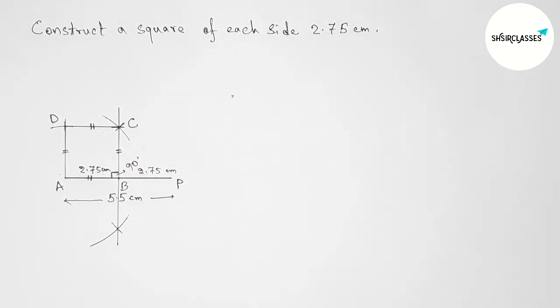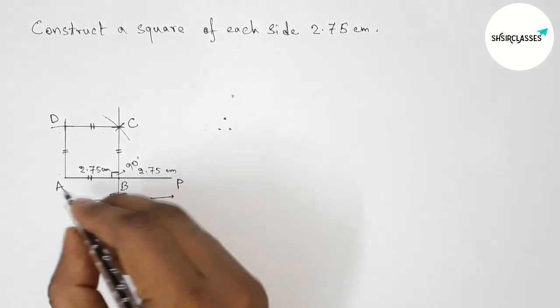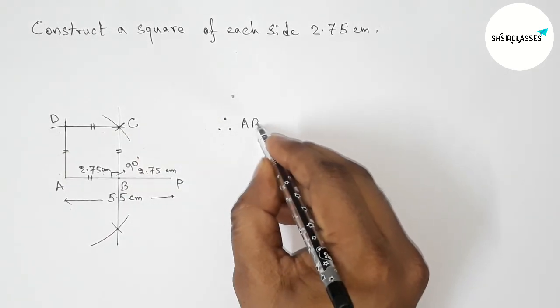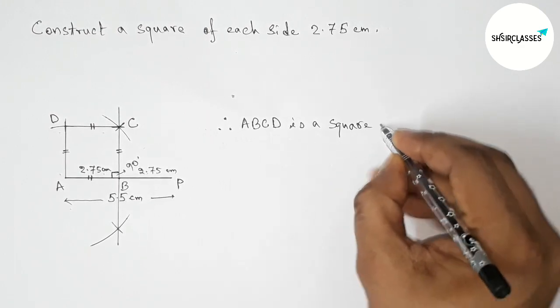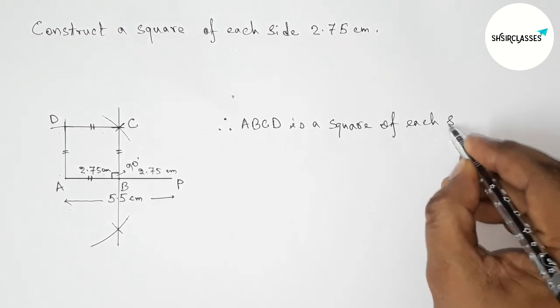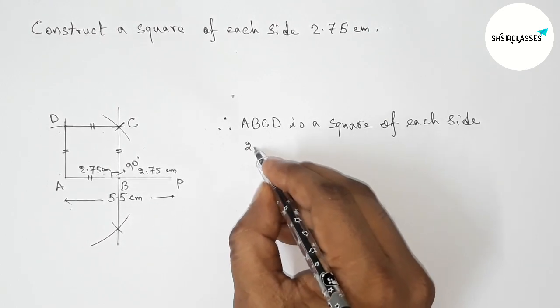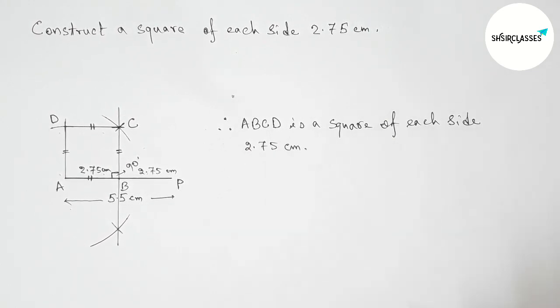So therefore here ABCD, ABCD is a square of each side 2.75 centimeter. So by this way you can construct. That's all, thanks for watching.